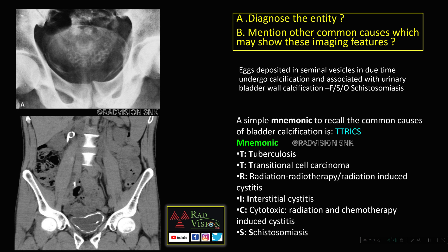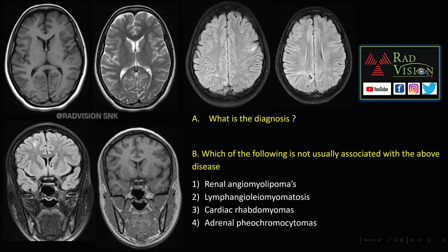Bladder wall calcification can be seen in schistosomiasis, but other conditions can be remembered by the mnemonic TRIX: T for tuberculosis, T for transitional cell carcinoma, R for radiation-induced cystitis, I for interstitial cystitis, X for cytotoxic (chemotherapy-induced) cystitis, and S for schistosomiasis. Remember: whenever there are multiple seminal vesicle lucent defects with calcifications and bladder wall calcification, definitely suspect schistosomiasis.